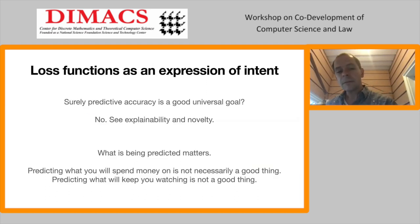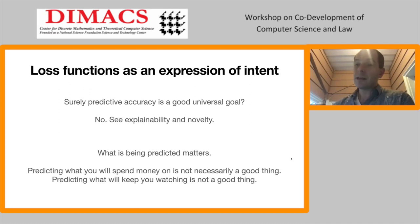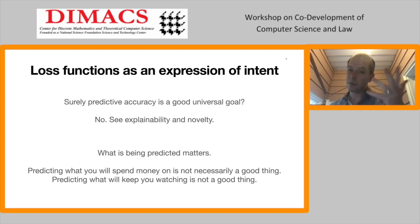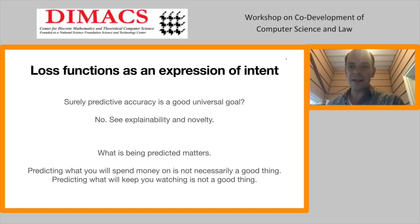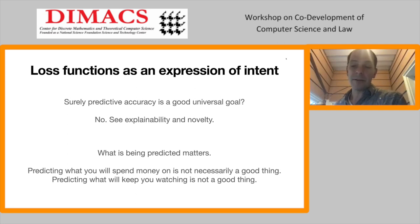This issue of misaligned incentives is a big one that I think is largely overlooked in much of the machine learning literature. Loss functions — the choice of what you're optimizing — is an expression of intent. It's the goal of the company: in YouTube's case, to keep your eyes on the screen. Predictive accuracy is not a good universal goal — predicting effectively doesn't necessarily help people in general, and explainability and novelty give other examples where there are other goals we might want to integrate.